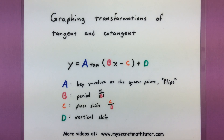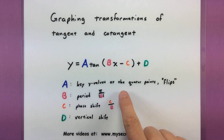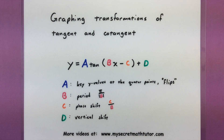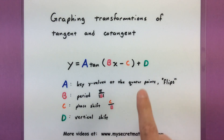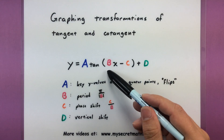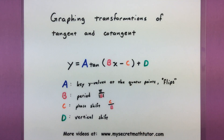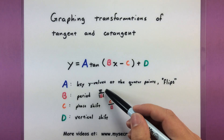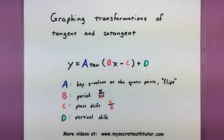Some minor differences: the a value, rather than giving us what we call the amplitude, is going to give us key values at what I call the quarter points. Like before, it will tell us if we need to flip the graph over the x-axis. b will still give us information about the period, c will give us information about the phase shift, and d will give us information about the vertical shift. Note that with tangent and cotangent, the period is found by taking pi and dividing it by the absolute value of b. This is because the regular period of tangent and cotangent is only pi, so that's why we're using that instead of 2pi, like we would for sine or cosine.